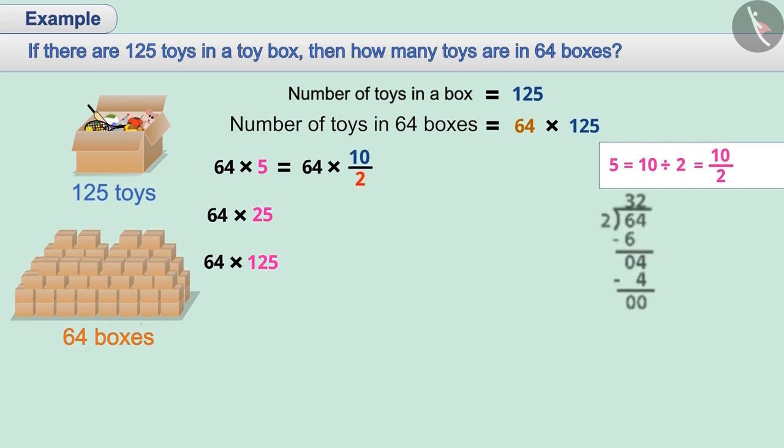To solve this, first we have to divide 64 by 2. The outcome is 32. Now, we will multiply 32 by 10 and we get the answer 320. We can solve this easily by verbal calculation.